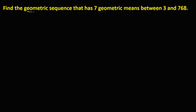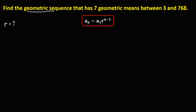Since this is a geometric sequence, we need to find the common ratio R. Using the geometric sequence formula, a sub n is the last term, and in the given, the last term is a sub n equals 768. Then a sub 1 is the first term, so a sub 1 equals positive 3.